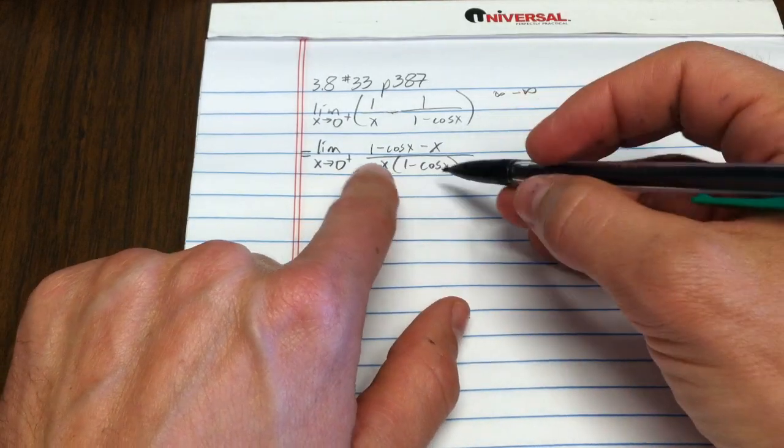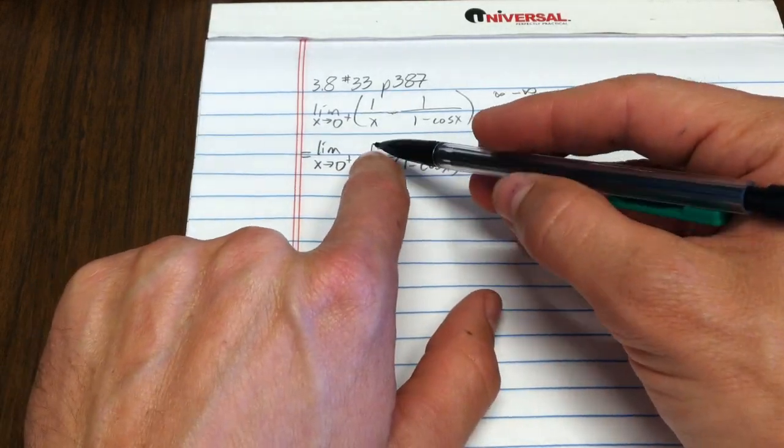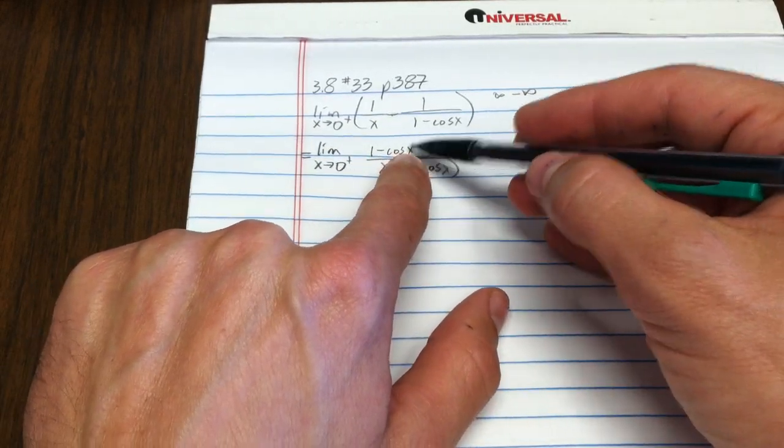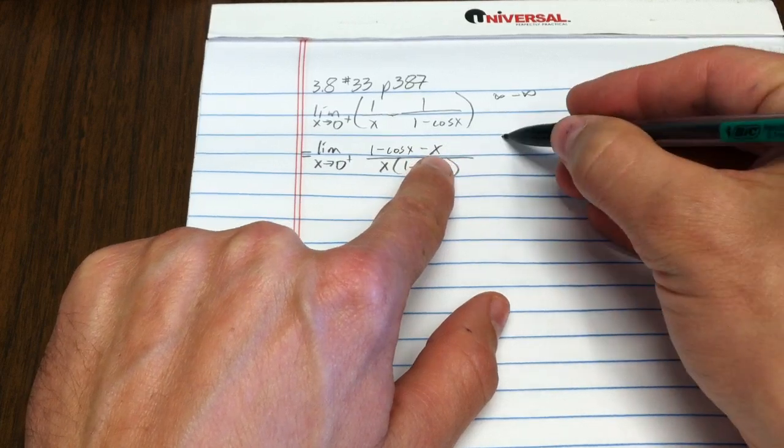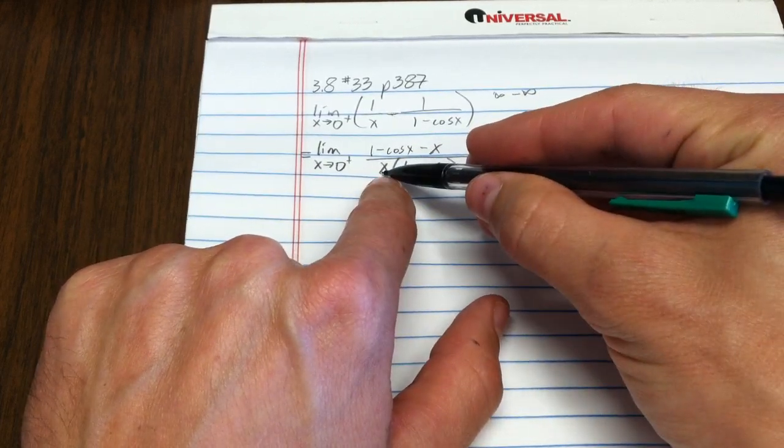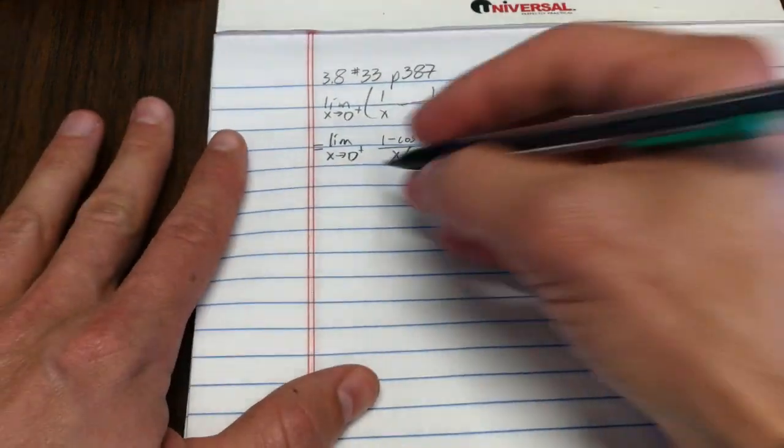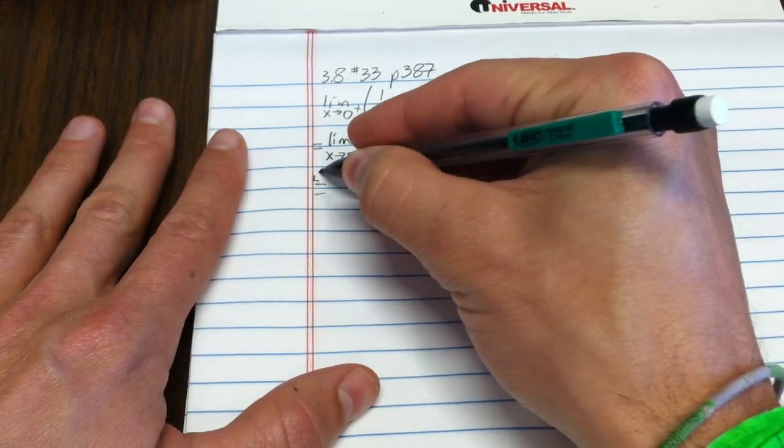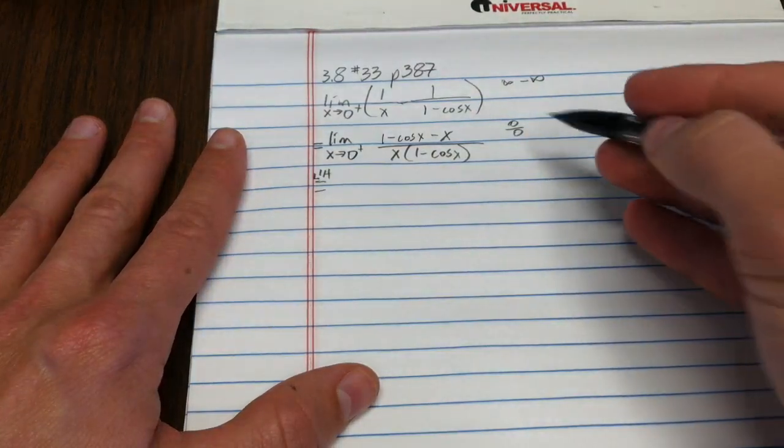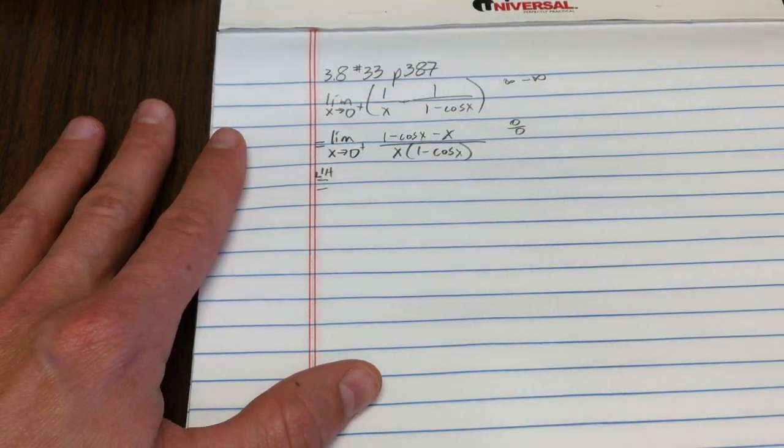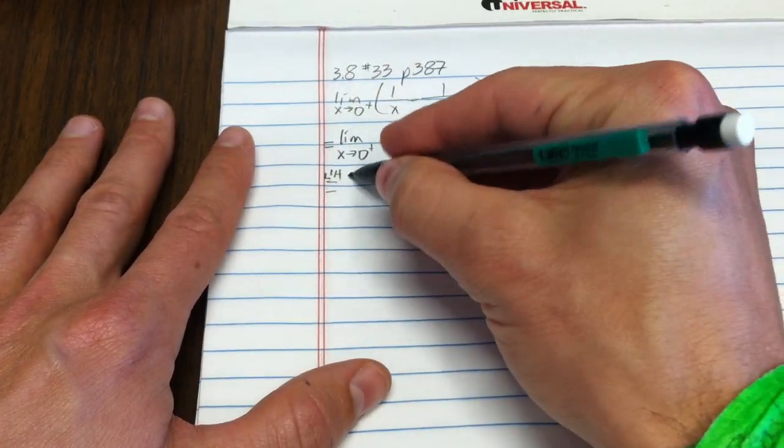Because as x goes to 0, the numerator becomes 1 minus 1 minus 0, so that's 0, over this becomes 0 times 0, so that's 0. Now that's an appropriate problem to apply L'Hôpital's to. I got the algebraic simplification to something that made L'Hôpital's a lot more tractable.